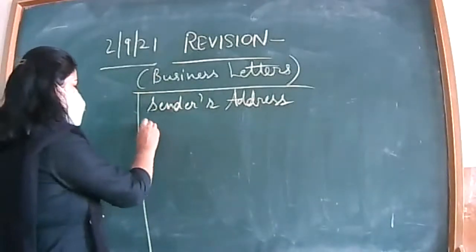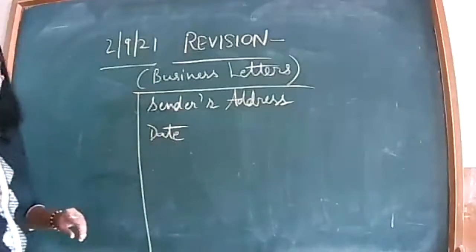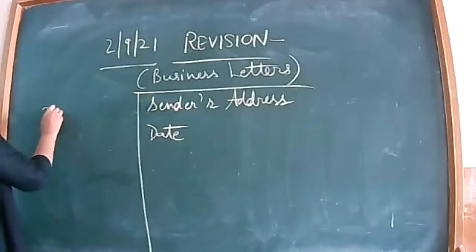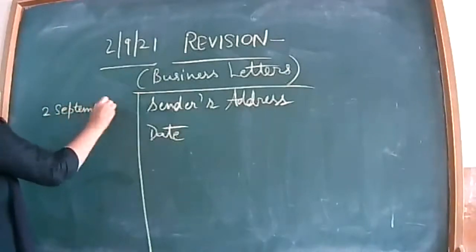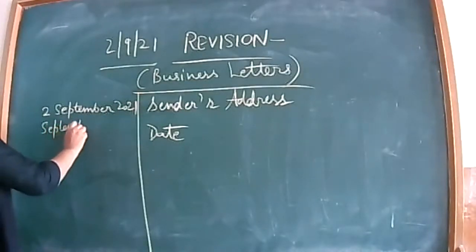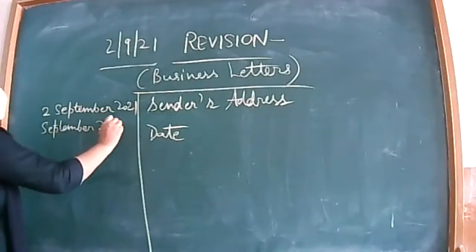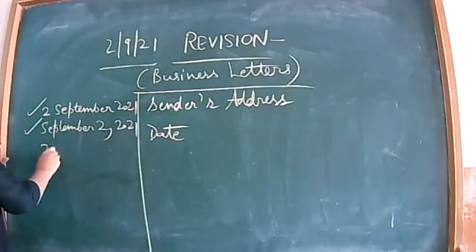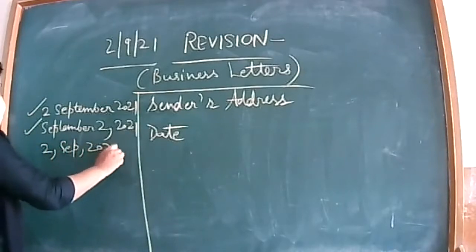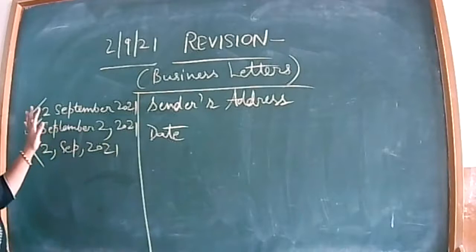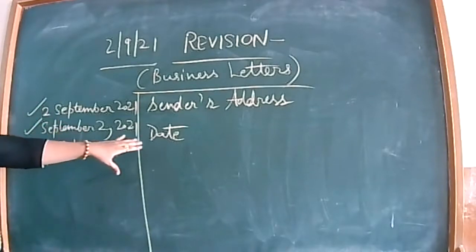And then after that, we skip a line and we write date. What is the correct format of the date? It is like this: 2nd September 2021. This is correct. September 2, 2021. This is also correct. But if it is written this way, this is wrong. Or any other way. You know the suitable ways to write the date. So date will be here.